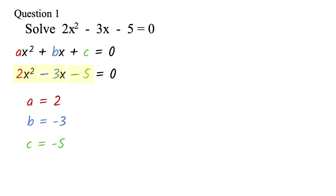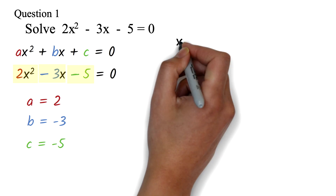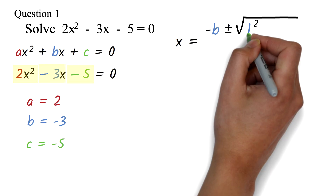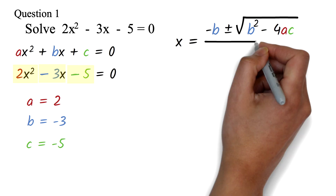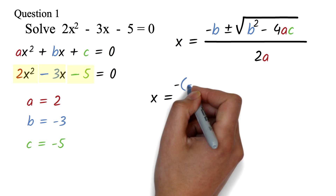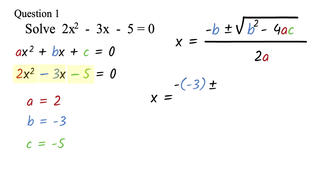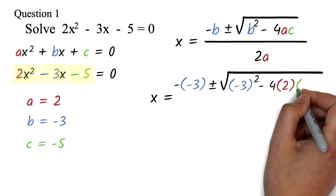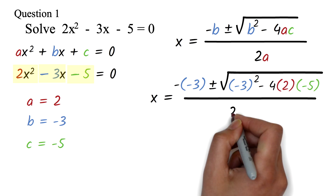Now we put these values in our formula. The quadratic formula is x equals minus b plus or minus square root of b squared minus 4ac, all over 2a. We'll just replace each of the letters by their values. Please take note of the color code so you know where everything is coming from. We have x equals minus negative 3 plus or minus square root of negative 3 squared minus 4 times 2 times negative 5, all over 2 times 2.